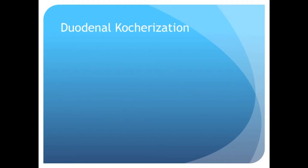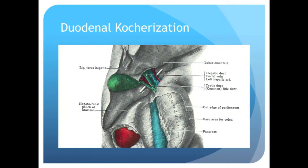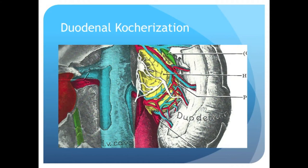The first part of the procedure is called the duodenal Kocherization. The pancreas is in yellow, the duodenum is in gold, and the inferior vena cava is in blue. The duodenal Kocherization involves incision of the retroperitoneal lining with exposure of the undersurface of the head and uncinate process of the pancreas and the anterior exposure of the inferior vena cava. It is by performing a duodenal Kocherization that the surgeon can palpate the superior mesenteric artery inferiorly to get a sense of the relationship between the tumor and the vessels. The anterior exposure of the inferior vena cava is critical to performing the procedure safely.